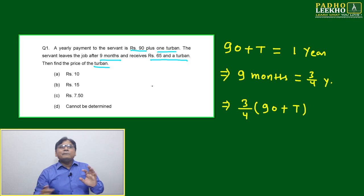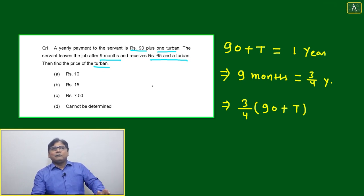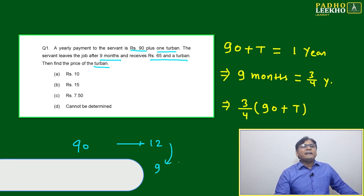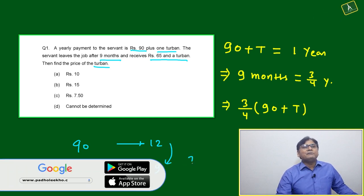They cannot give like 0.5 turban either. Then here simple things are coming. Whatever data is coming, one is 90 for 12 months, another is he got 65 plus turban in nine months. Here what is the variation? This 12 to 9 means you can say 75%.